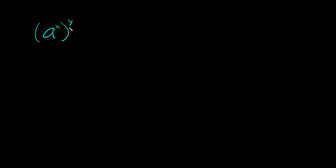The equation we're going to use to guide us is: a to the x, to the y, is equal to a to the x times y. So if you have a number raised to an exponent, and then that whole thing is raised to another exponent, you're just going to multiply the two exponents together.